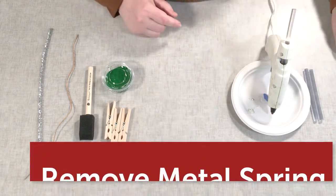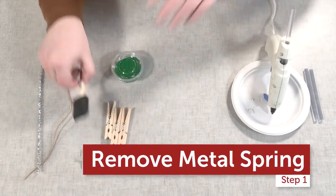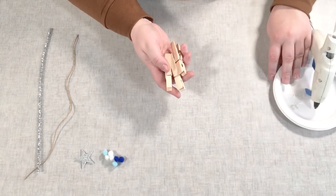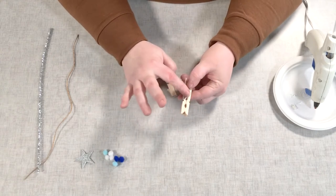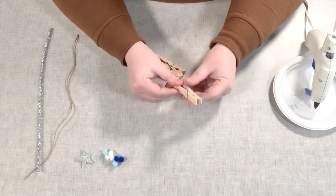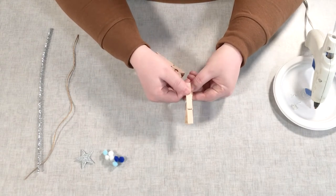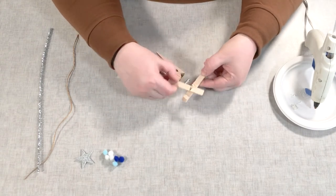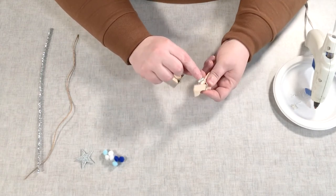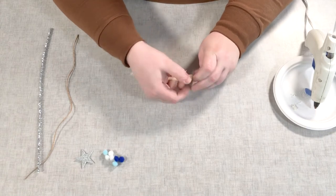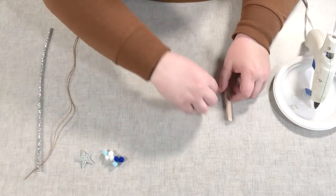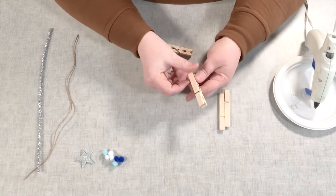So to get started, first thing you're going to do is take your clothespins and we're going to twist these to get the metal pins off of them because we want the clothespins to be in two separate pieces. So all you have to do is just twist, hold it like this, twist, twist, and you'll see that little pin will pop out with a little spring and you can just pull it off and set that aside. You're going to do all three of them just the same.